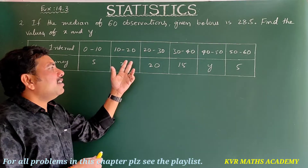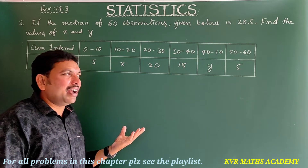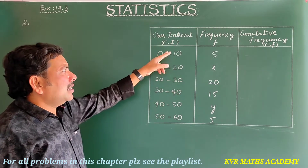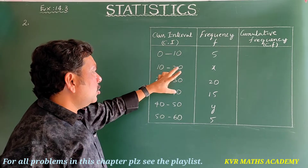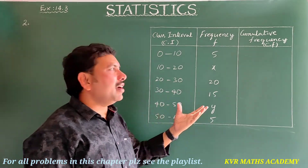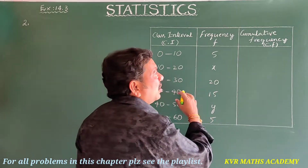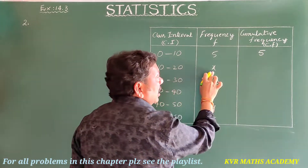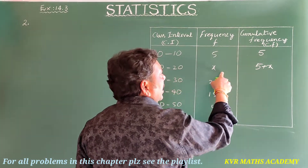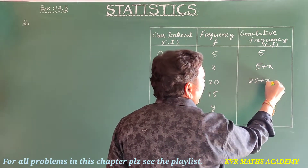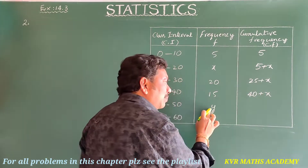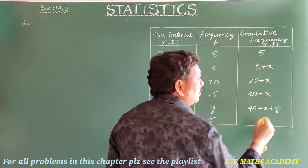To find x and y, I'll draw the table with class interval, frequency, and cumulative frequency. The cumulative frequencies work out as: 5, then 5+x, then 25+x, then 40+x, then 40+x+y.